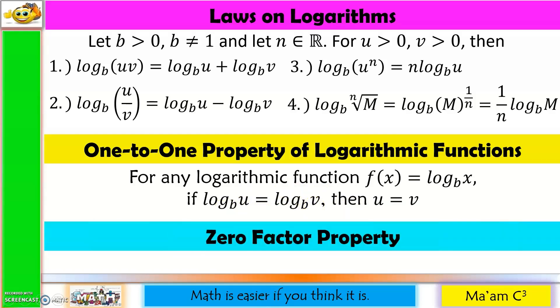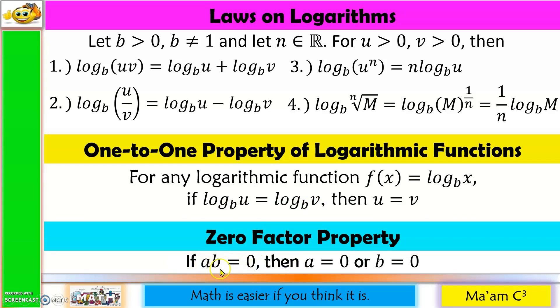It is also good to note the zero-factor property: if a times b is equal to zero, then either a or b is equal to zero.